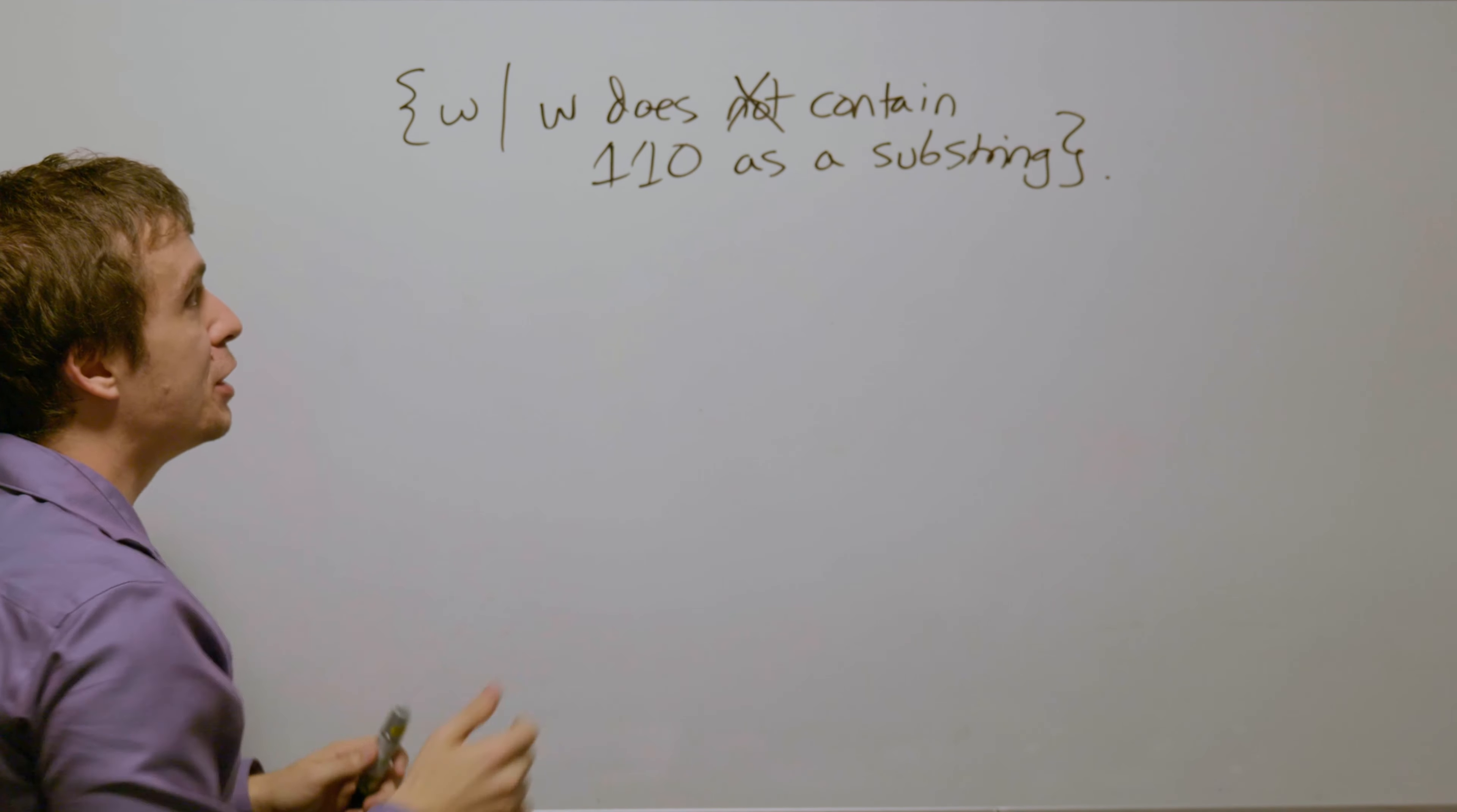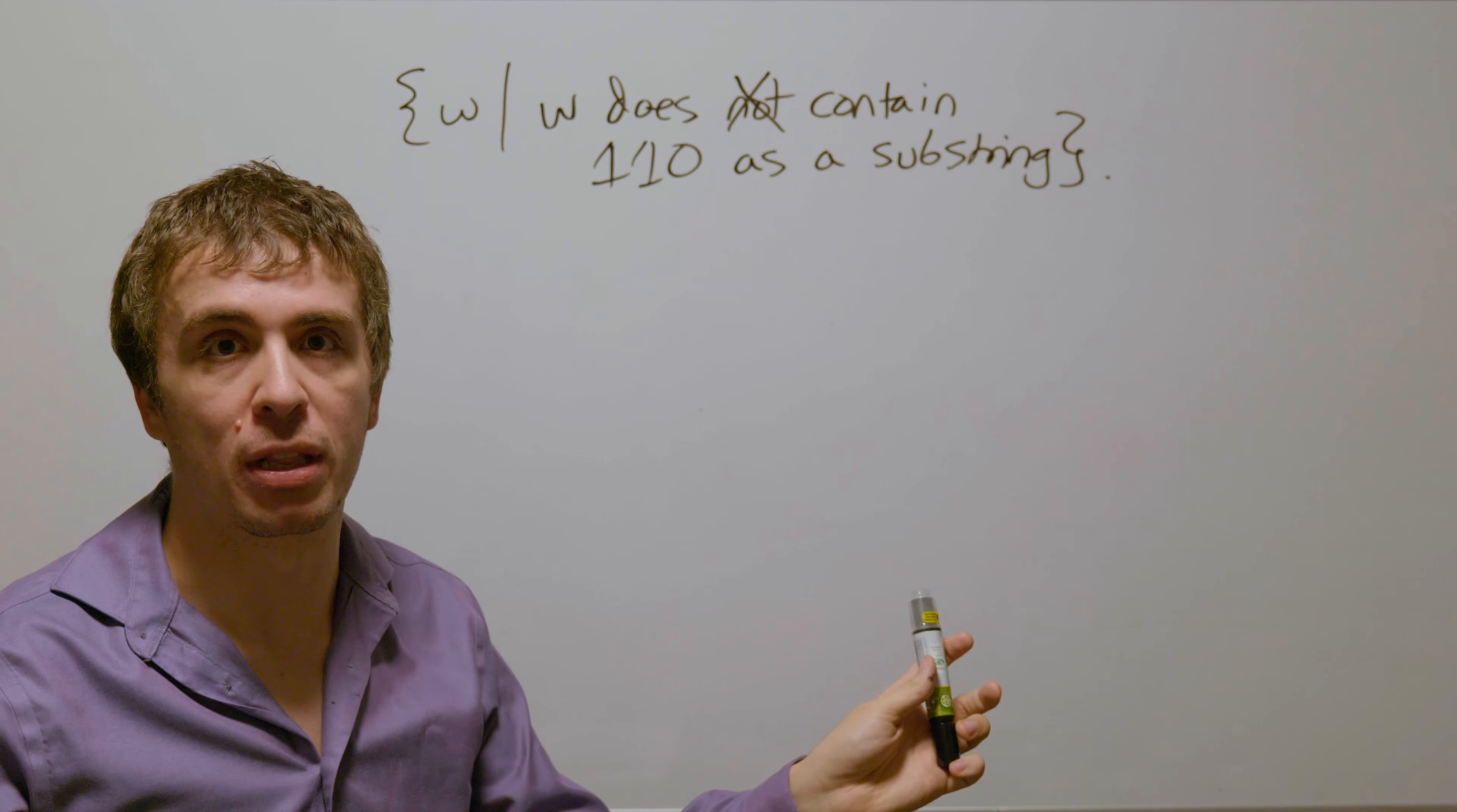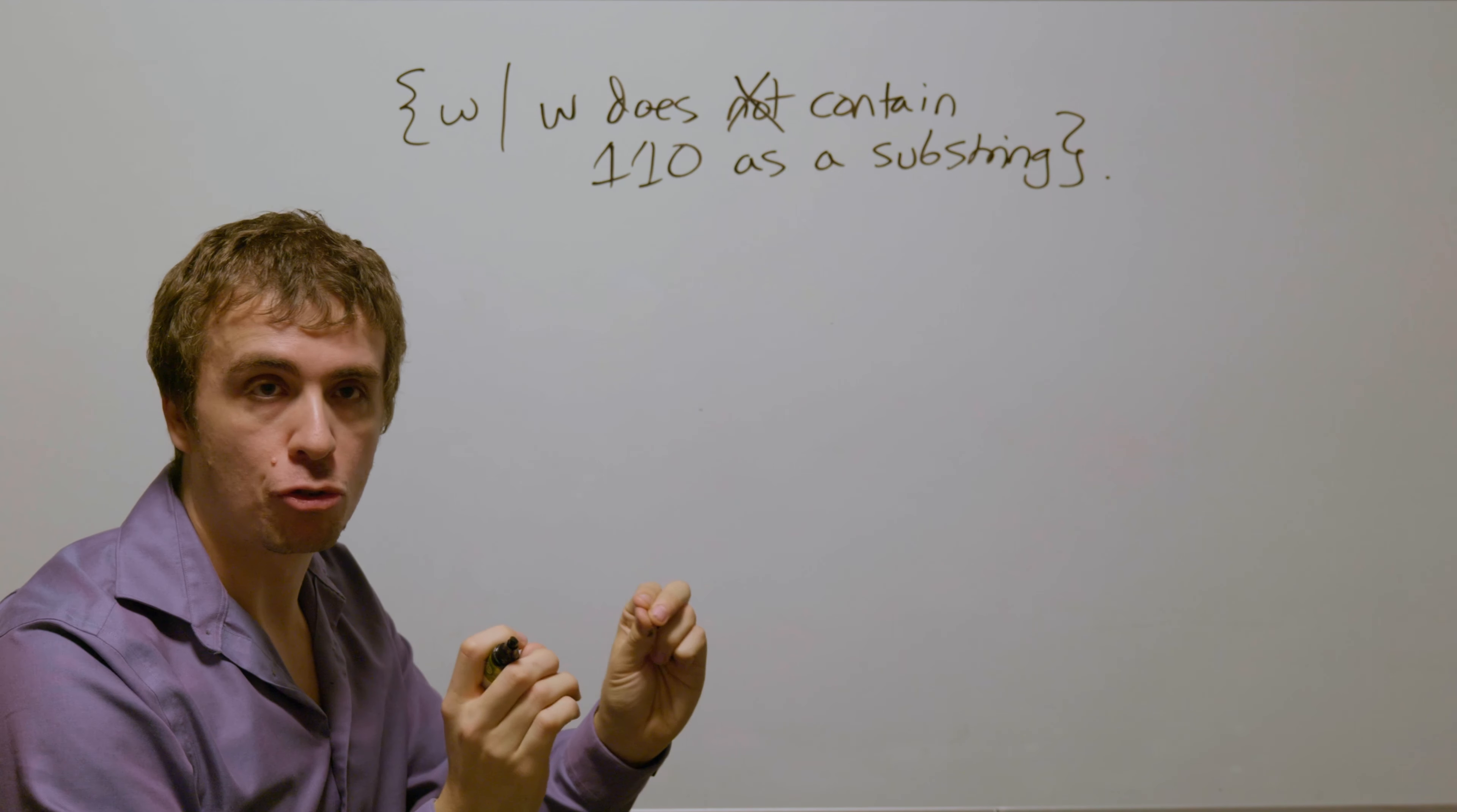So how are we going to approach this? Let's add transitions to get the strings that are in the language and then worry about the ones that are not in the language later. So to get this, let's just focus on getting exactly 110, that string alone.